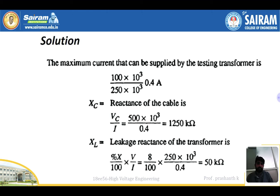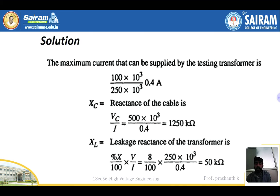Solution: The maximum current that can be supplied to the testing transformer is 100 kVA divided by 250 kV, which gives 0.4 amps. The reactance of the cable Xc is calculated using Vc divided by Xc (similar to V = IR), giving Xc = 1250 kilohms.